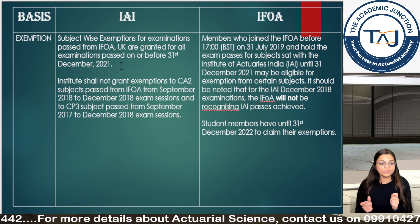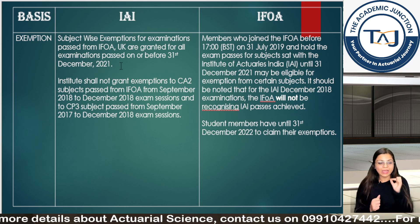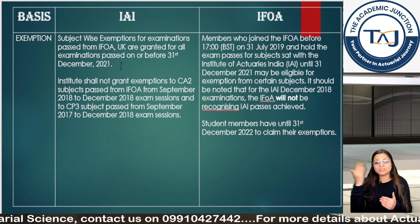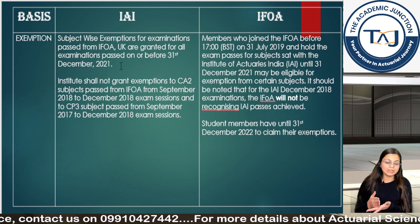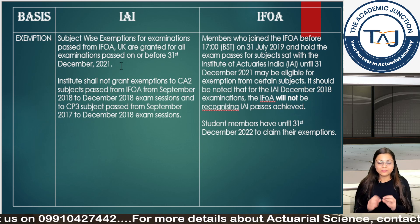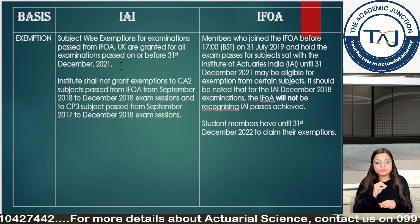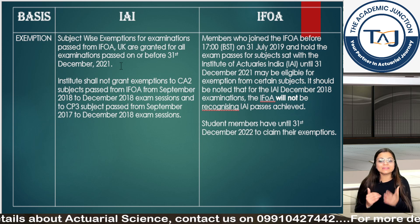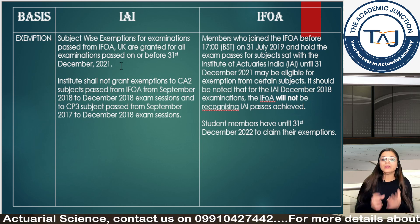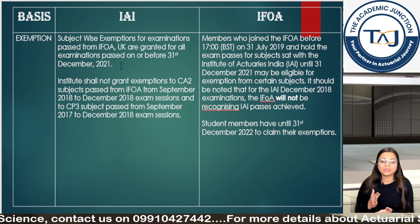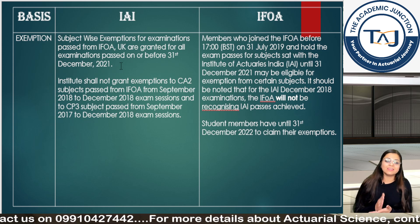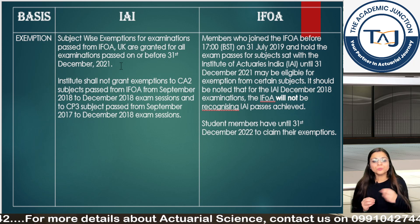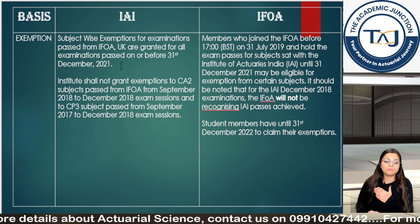An important note for higher-level students: II is currently not granting exemptions for CA2 and CP3 from September 2017 to December 2018 exam sessions. Crucially, members only have until 31st December 2022 to claim exemptions. If you have cleared any exams from one society and want the other to grant exemption, make sure to apply before 31st December 2022, as IFOA clearly states that any application received after that date will not be accepted.